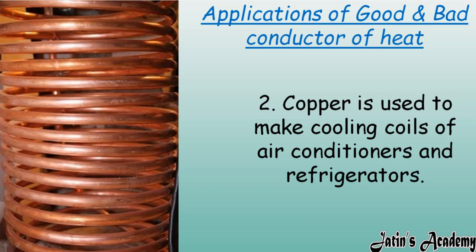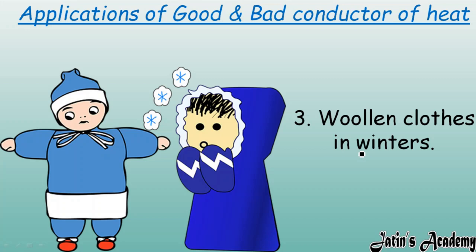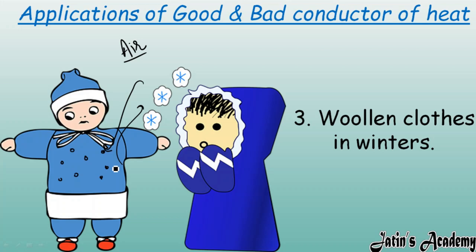Copper is used for making cooling coils of air conditioners and refrigerators because copper is a good conductor of heat. Woolen clothes are worn in winter because wool has pores that trap air — air being a bad conductor of heat does not allow our body heat to escape, keeping us warm.